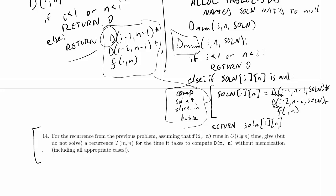We're working on part 14 of the practice exam. For the recurrence from the previous problem, assuming that f(i,n) runs in O(i log n) time, give but do not solve a recurrence T(m,n) for the time it takes to compute D(m,n) without memoization including all appropriate cases.